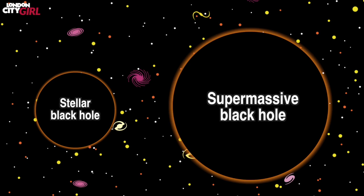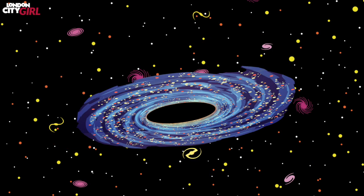Black holes can grow by taking in more matter and merging with other black holes. Supermassive black holes are found in the center of galaxies. The supermassive black hole at the center of our own Milky Way galaxy is an impressive 4.3 million times the sun's mass.